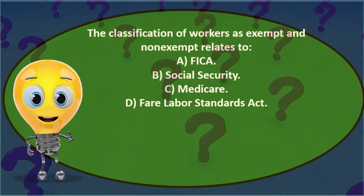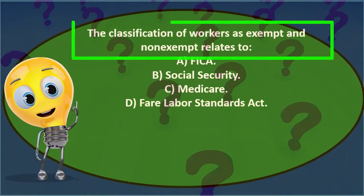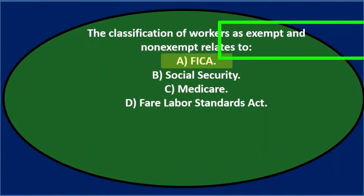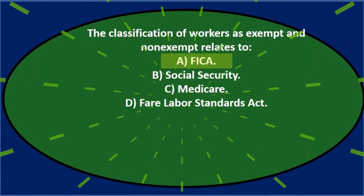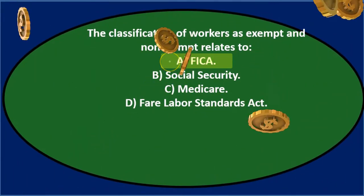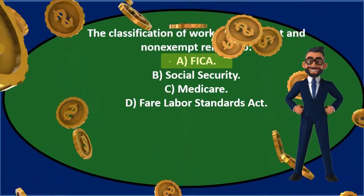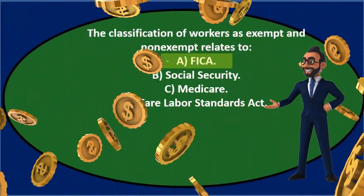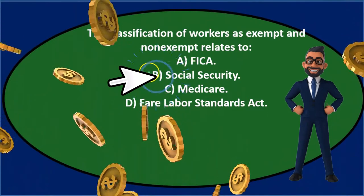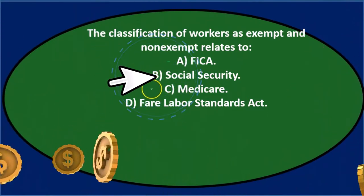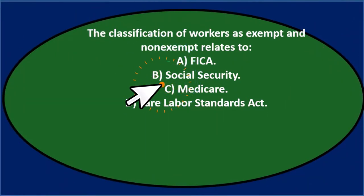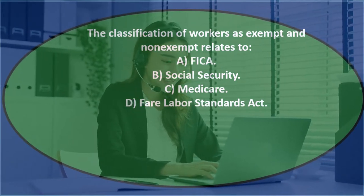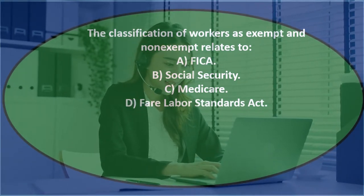The classification of workers as exempt and non-exempt relates to A. FICA — we could think FICA is a major type of legislation related to payroll, so we'll leave that for now. B. Social Security, and C. Medicare. Now, the thing about those three is they're all related — Social Security and Medicare are part of FICA.